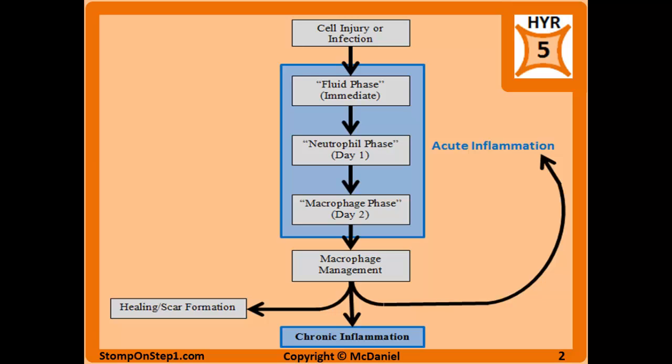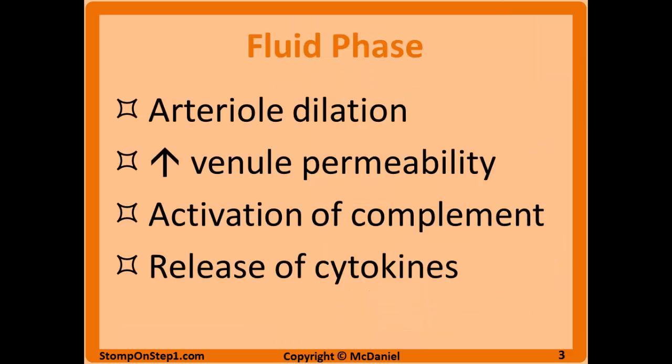This diagram is a bit oversimplified but should have everything you need to know for the exam. Inflammation is initiated by cell injury or infection at the top, and then you progress into acute inflammation, which is broken down into three distinct phases. The first is the fluid phase, which starts immediately after the onset of injury or infection. In the fluid phase there is arterial dilation bringing more blood and fluid to the site, and an increase in venous permeability so more fluid spills out into the affected tissue — causing the characteristic swelling, redness, and warmth of acute inflammation. Additionally, the complement system is activated and various cytokines are released.